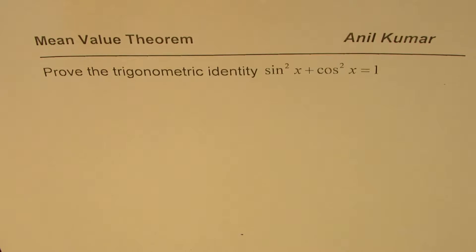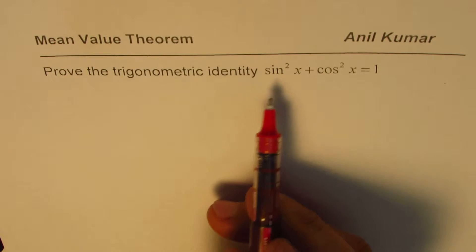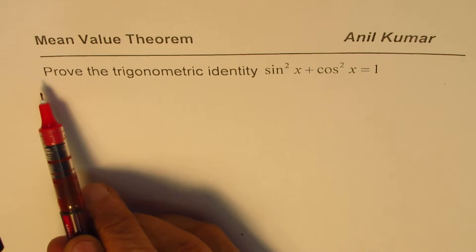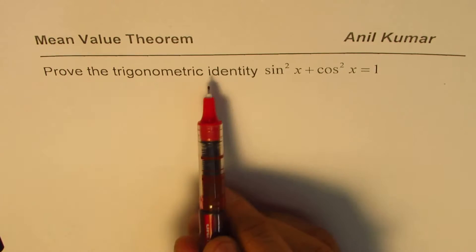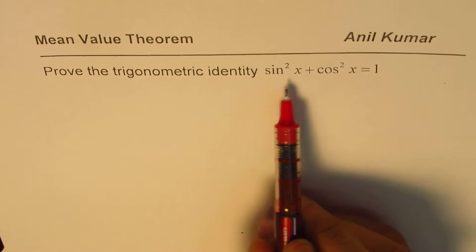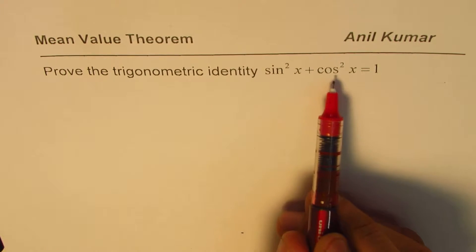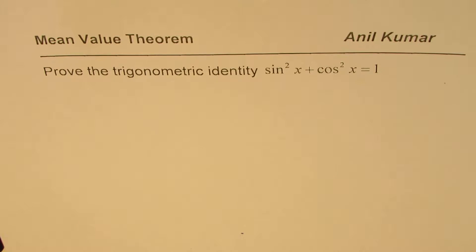I'm Adil Kumar, sharing with you an example to prove a trigonometric identity from the mean value theorem. The question here is: prove the trigonometric identity sin squared x plus cos squared x equals 1.